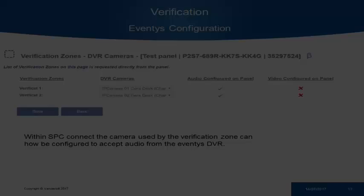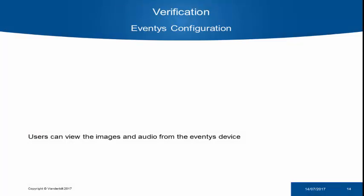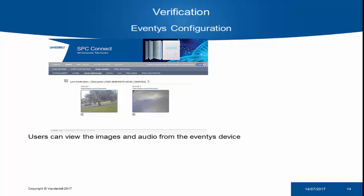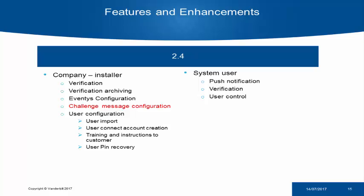In the final setup, we configure the verification zones on SPC Connect. Once this is achieved, SPC Connect will retrieve the verification zones currently configured on the SPC panel and allow you to select if the NVR's camera should be used for a particular verification zone. From here, we can also look at the live verification from the NVR to ensure we have the correct camera. The end result is that if a verification zone is triggered with an Aventus DVR, the video stream will be pulled from the NVR as if it was a camera on the SPC system.